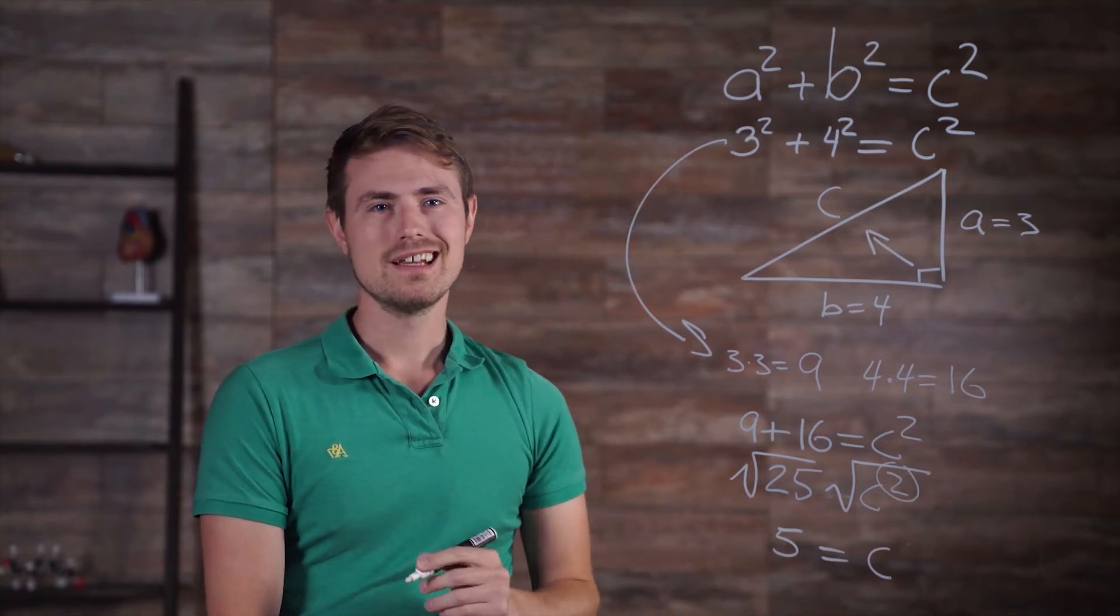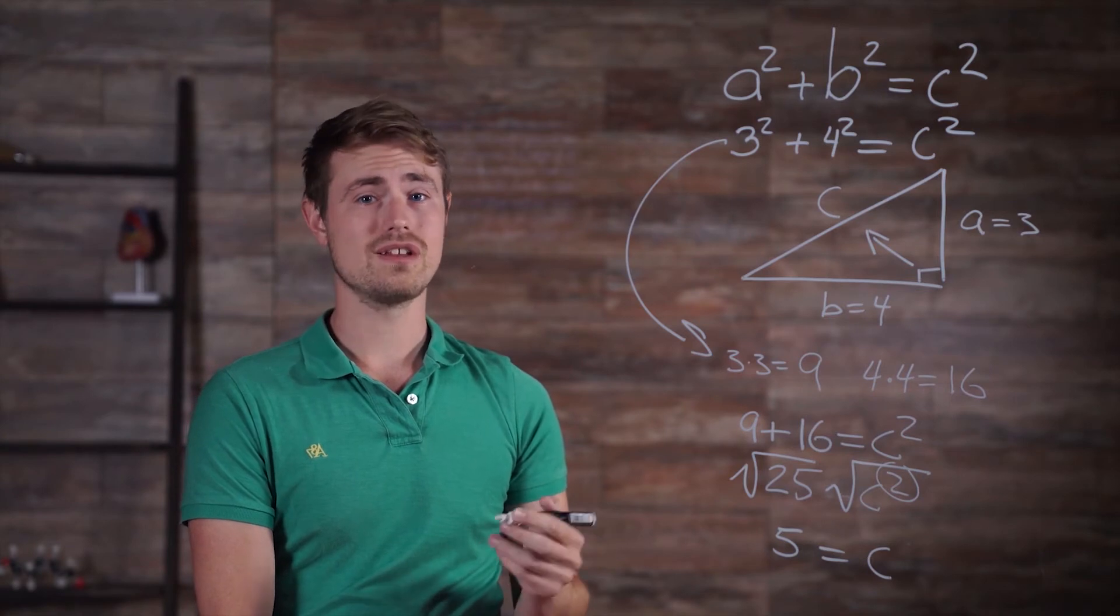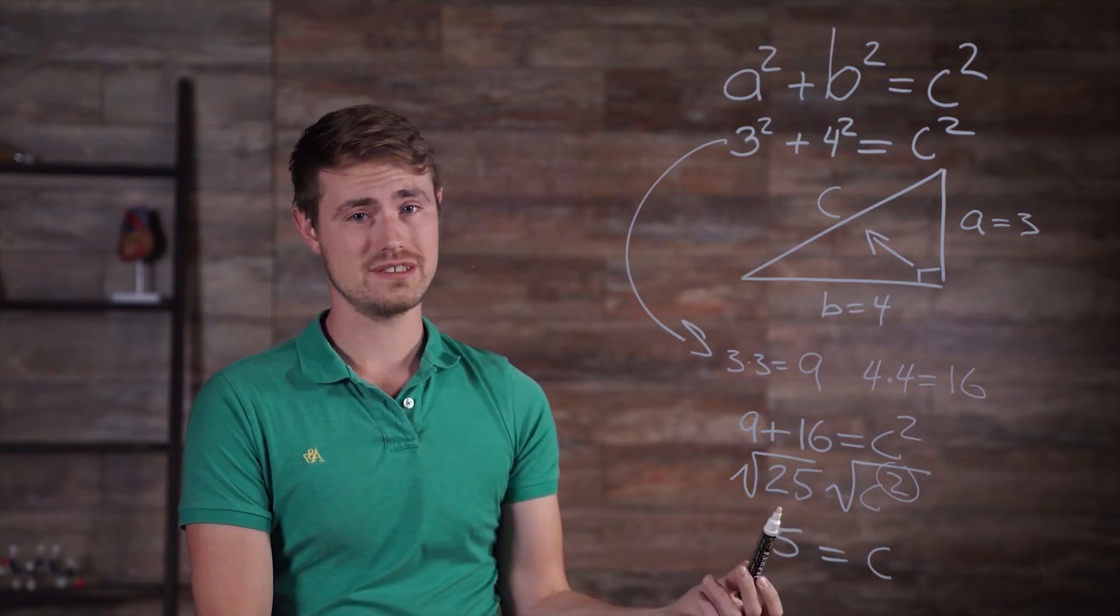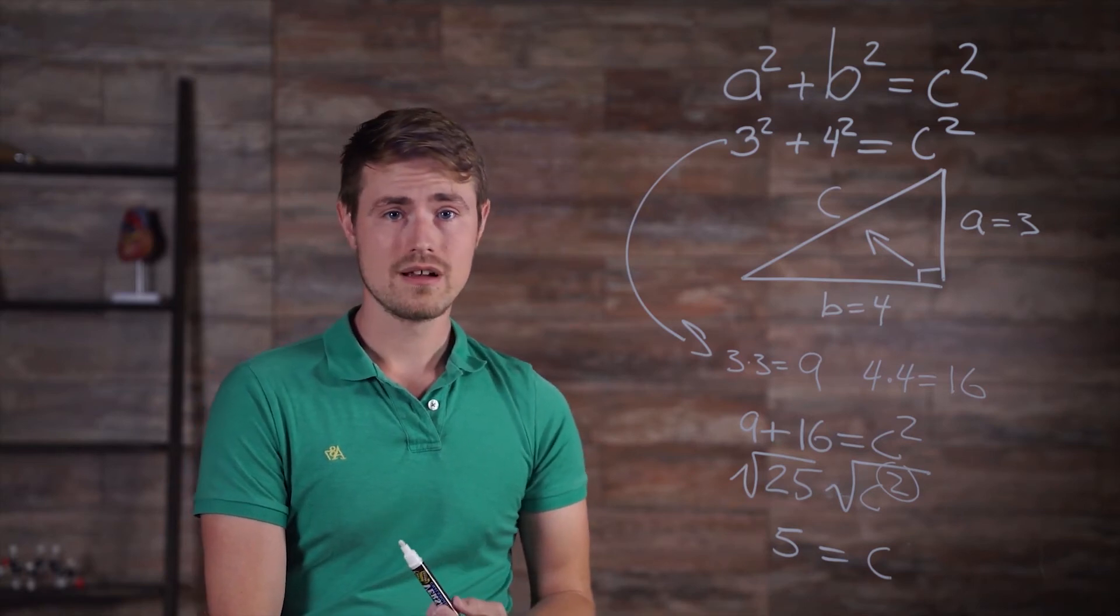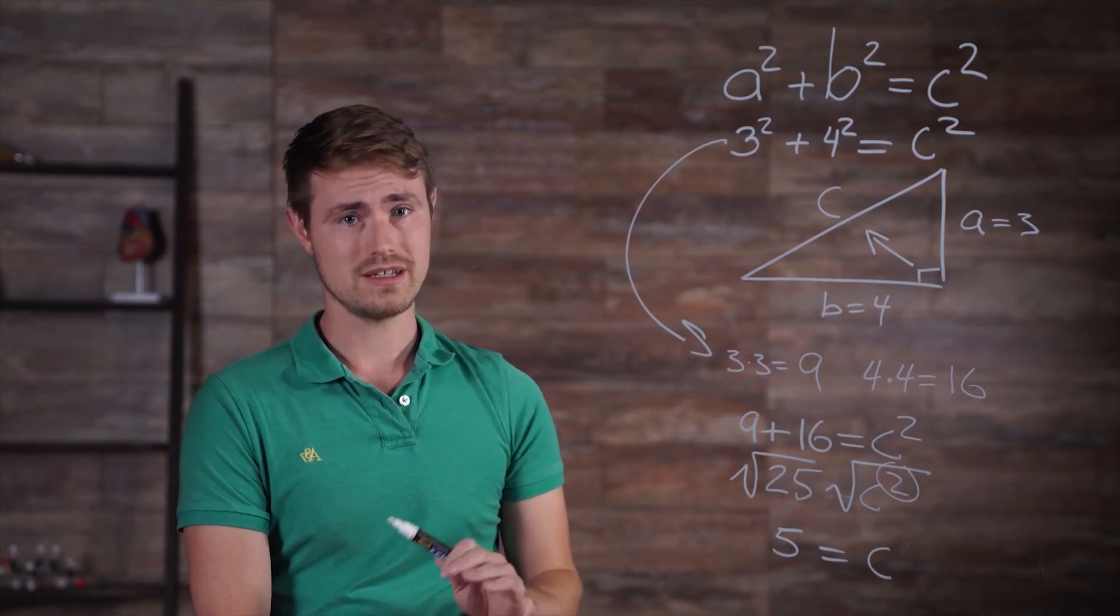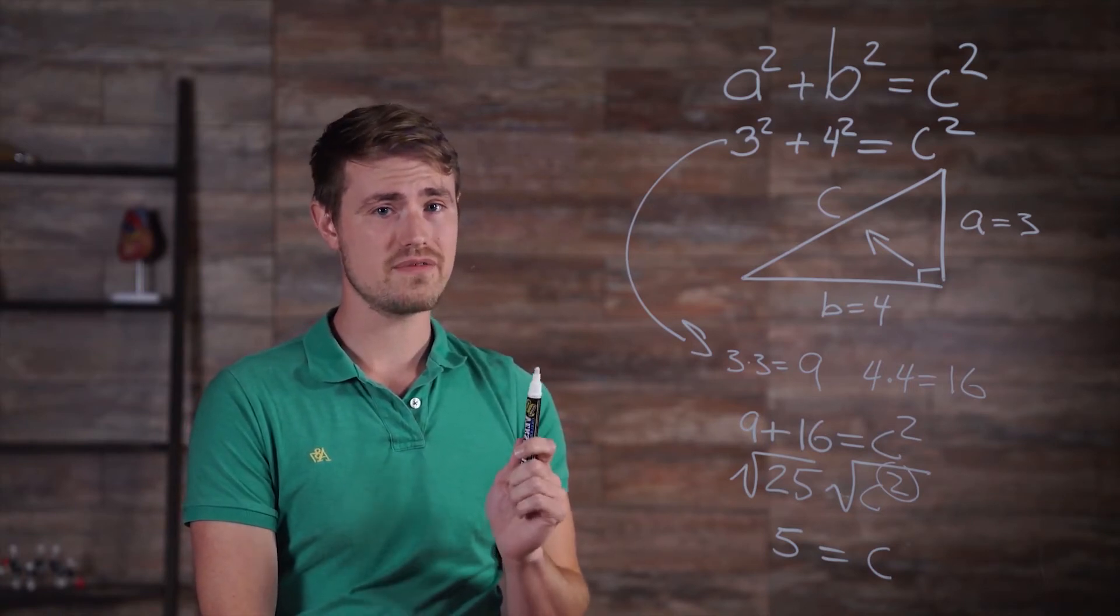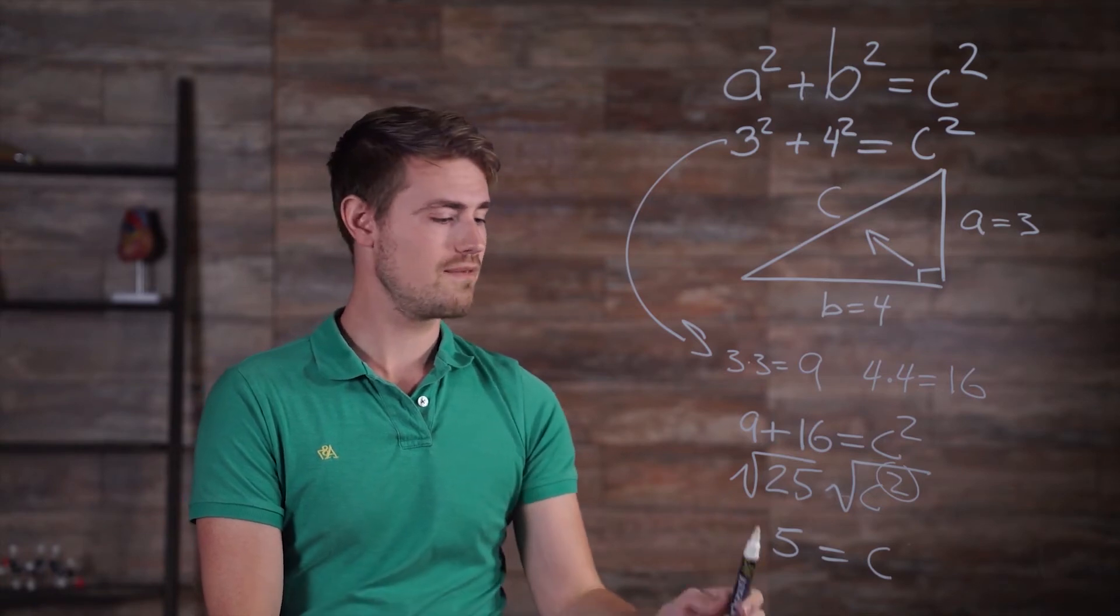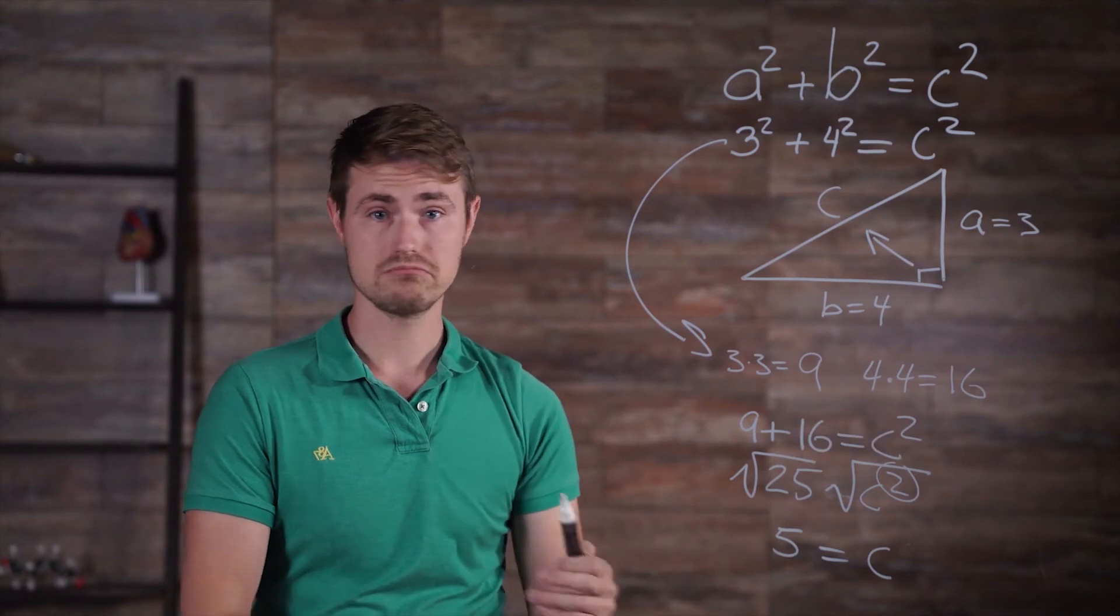Look at that. It's always good to check our answer to see if it makes sense. Since we're finding c, it should be longer than any of the other two sides, and five is greater than both three and four. Also, because of the triangle inequality theorem, which is something we'll get to in a later video, the hypotenuse must be less than the sum of the other two sides, which means five has to be smaller than three plus four, which it is.